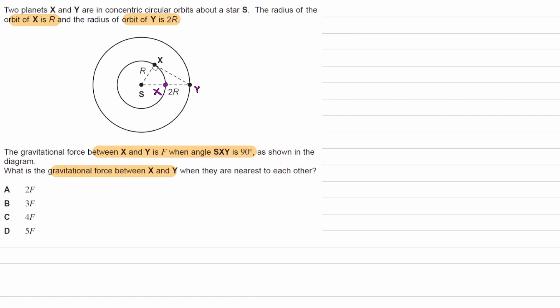So the separation between the two of them would be R. As we know this distance here is R, and the full distance is 2R, well R is just the difference.